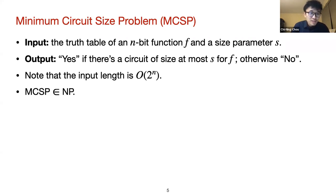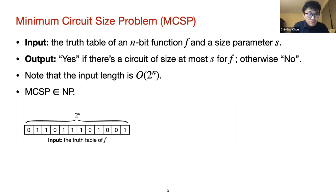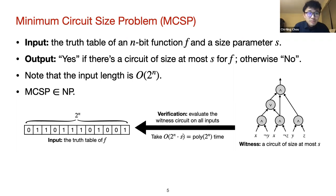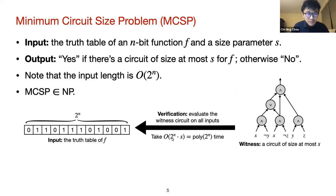We can show MCSP is in NP, and the reason is simple. The input is the truth table of a Boolean function of length 2^n, and the witness is a circuit of size at most s for this truth table. The verifier runs through all possible inputs and checks bit by bit on the truth table, verifying whether the circuit computes our Boolean function. The running time is O(2^n · s), which is polynomial over the length of the input, so MCSP is indeed in NP.